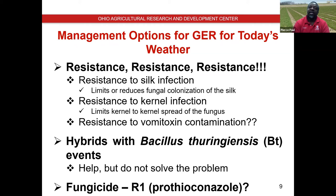Fungicide is an option. Prothioconazole — the active ingredient in Proline — is the best fungicide we've seen for Gibberella ear rot control. Results are not very consistent; there's lots of variation within and between experiments. But at this point, this is the best option we have. It has to be applied at R1, the silking growth stage, because that's when infection occurs. One of the big problems is that if you're flying over the top or using high-clearance sprayers, it's hard to get that fungicide down to the height of the ear to protect the silks.